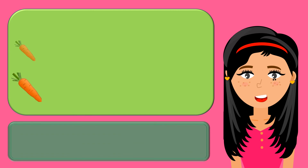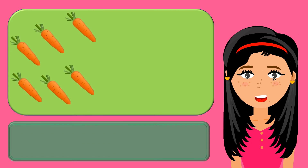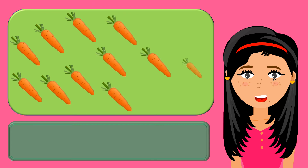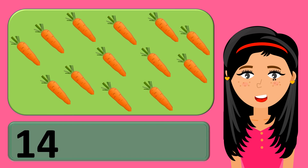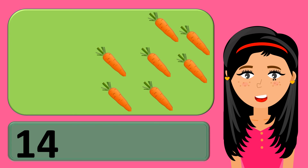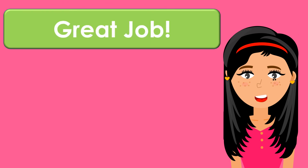One, two, three, four, five, six, seven, eight, nine, ten, eleven, twelve, thirteen, fourteen. Fourteen. One, two, three, four, five, six, seven. Seven. Fourteen minus seven equals... Seven. Good job!